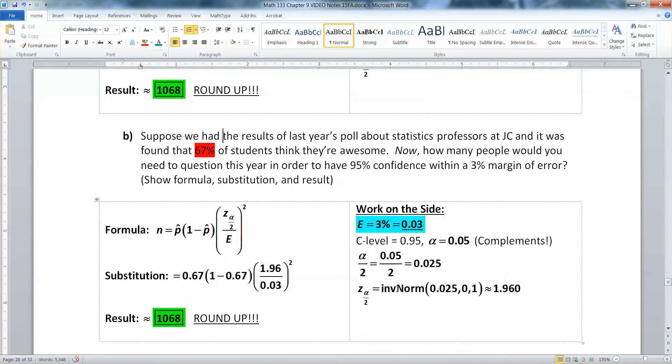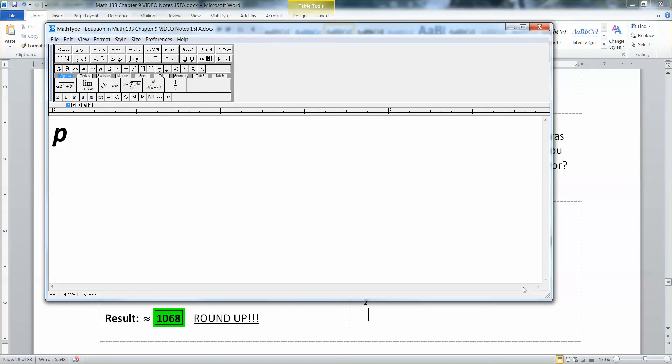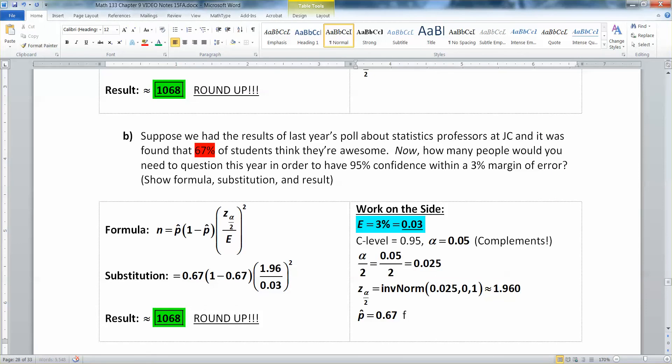Now, where am I getting that from? Well, good question. So right here, it says 67%. That's your p-hat value. I'll label it red. So let me just put it right down here. P-hat is 0.67 from a prior study, from a prior survey. Some old data, right there.